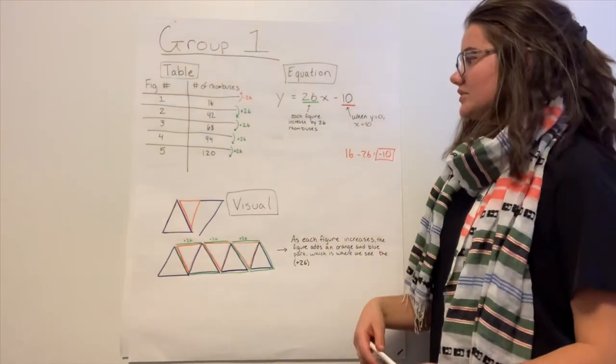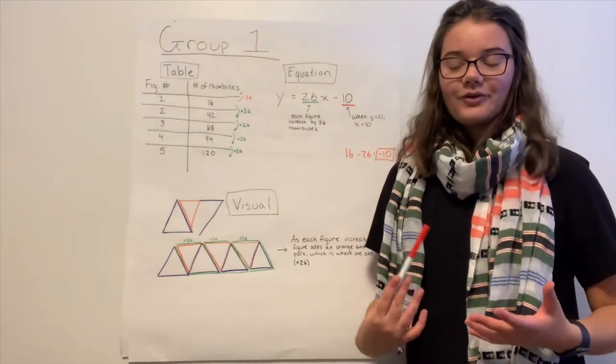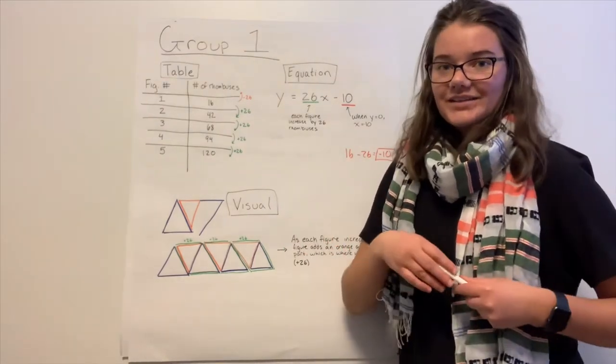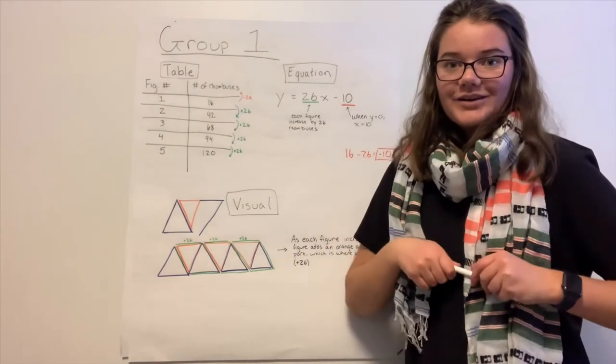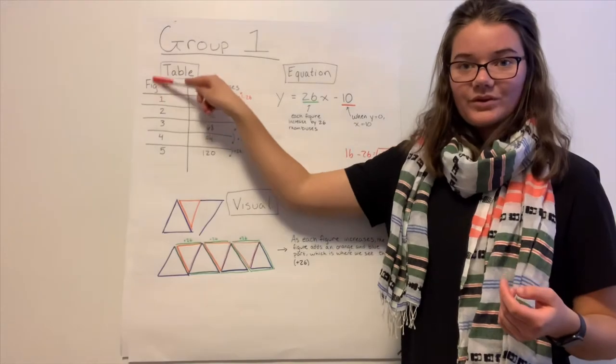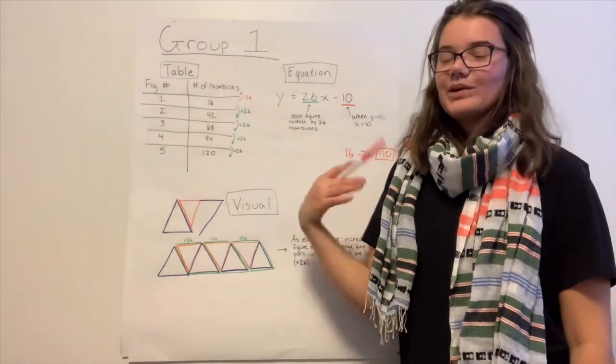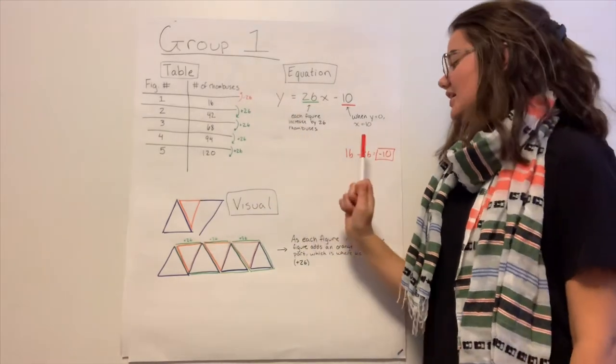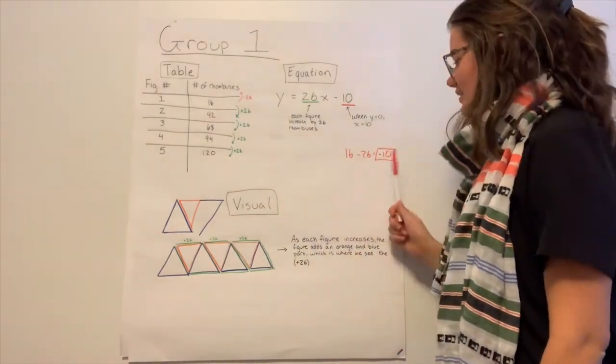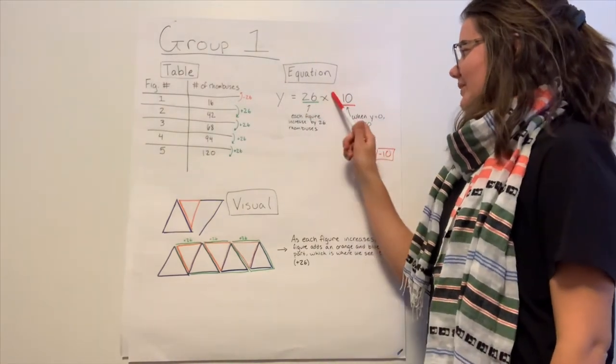So maybe a student would say that and a student would also say, but then we were thinking, what about the y-intercept, right? And so the y-intercept is when x equals zero. And so we have to go back one to get the y equals zero, which means we'd have to go back with our rule, which we already came up with, which is plus 26. So minus 26, 16 minus 26, negative 10. That is our y-intercept. And so 26 minus 10.